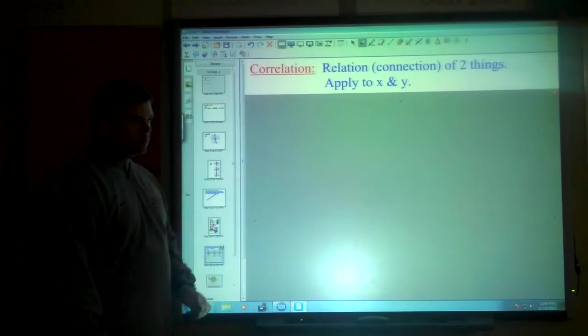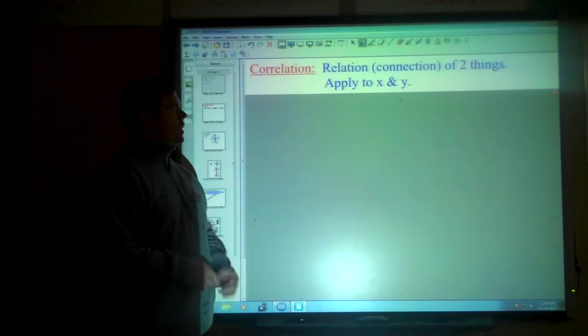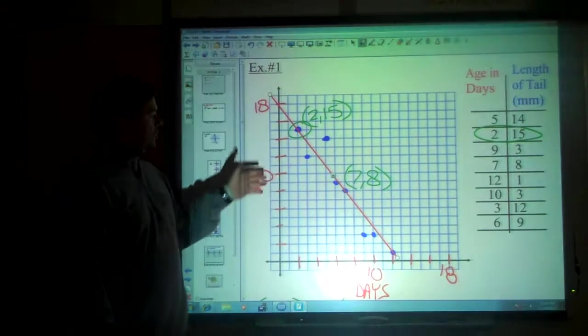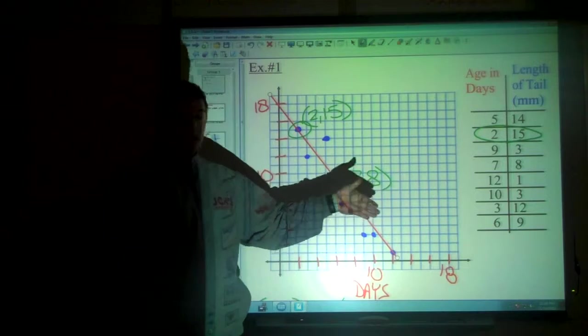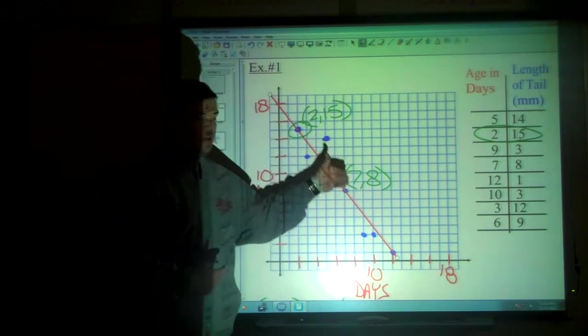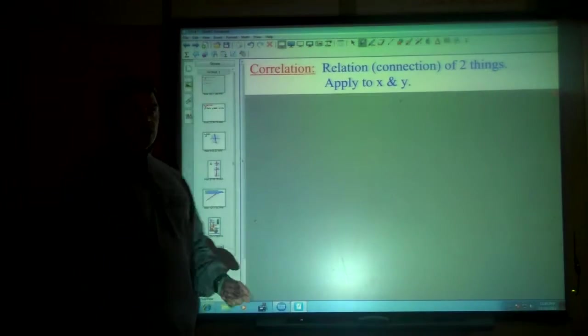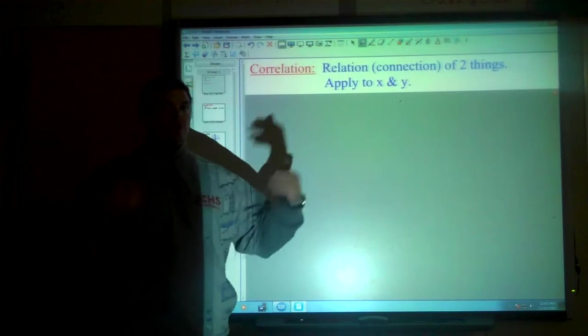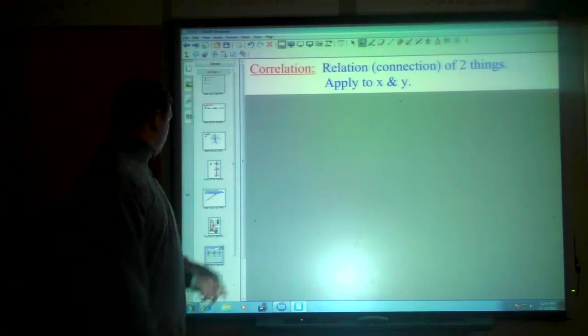Correlation. Correlation is just involving relationships or a connection of two things. We can apply them to X and Y. It seemed as if there was a correlation between the age and the tail length. As the age of the tadpole got to be more, as the age got older, the tadpole's tail went and got smaller. There's other correlations. The more gas that you use, the more it's going to be expensive. The more you drive, the more gas you use, the more expensive. The more I eat, the more I weigh. Those are all going to have correlations.